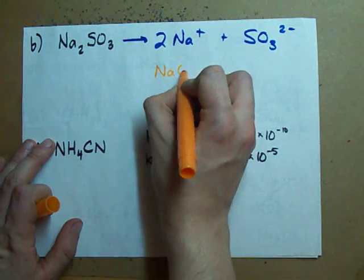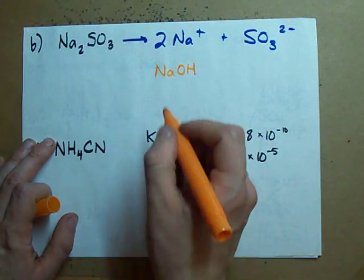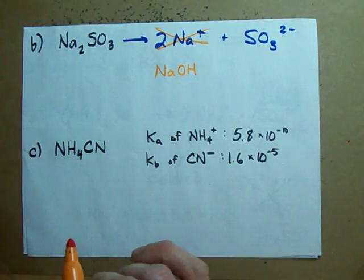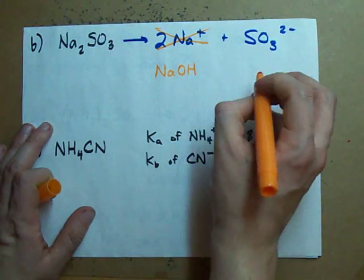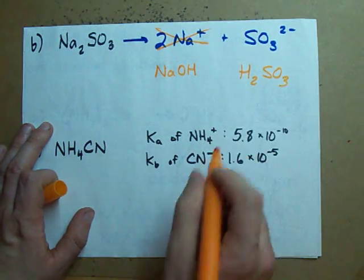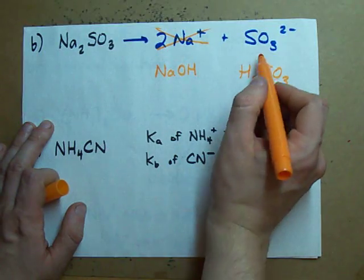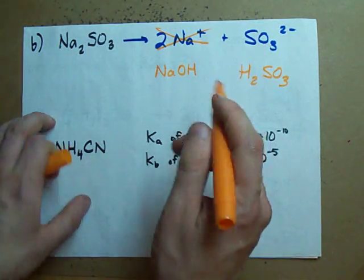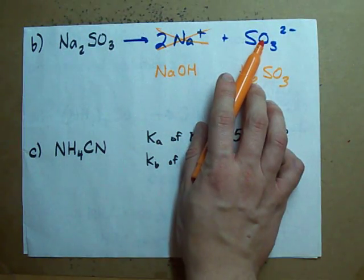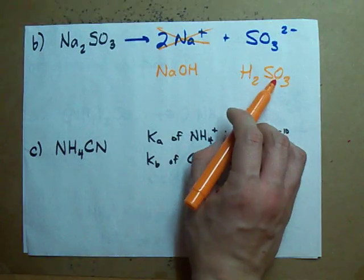Well, this is the conjugate of NaOH, a strong base. That means this is weak and probably won't affect the pH of your solution. This is the conjugate of H2SO3, which is a weak acid. That means that this has the ability to suck up protons.